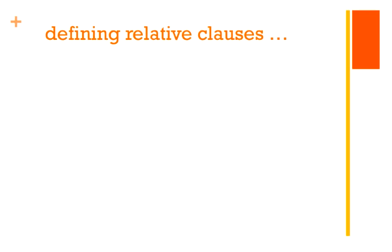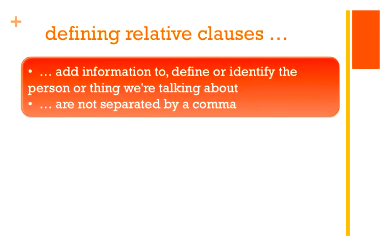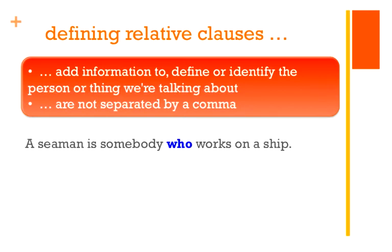Let's continue with the defining relative clauses. Defining relative clauses add information to define or identify the person or thing we're talking about. In the non-defining relative clause, the person's identity was already established. In this case it's not, so we need a defining relative clause to add information about the person or thing we're talking about. For example: 'A seaman is somebody who works on a ship.' The relative clause 'who works on a ship' is necessary — it's defining the 'somebody' which refers back to a seaman.